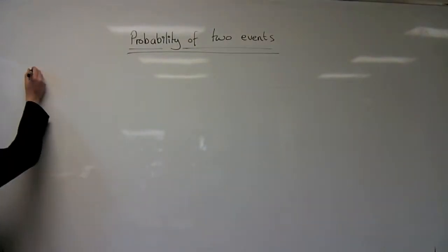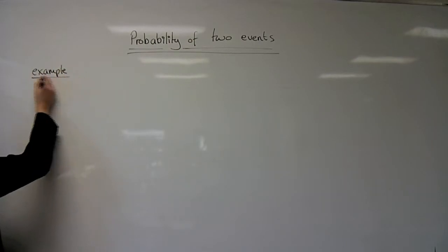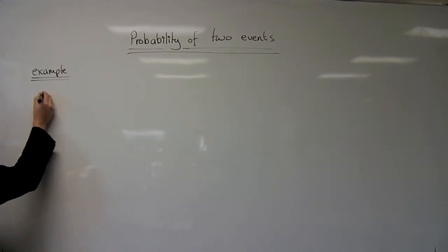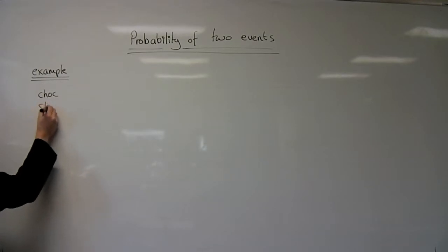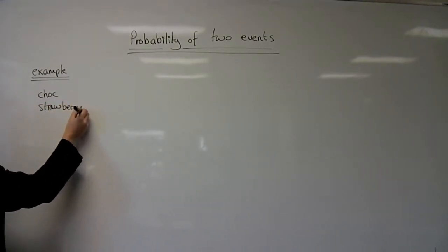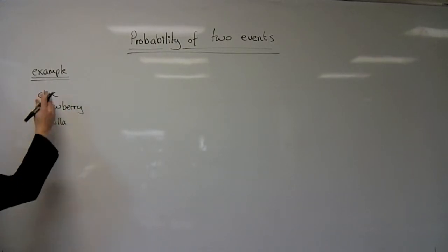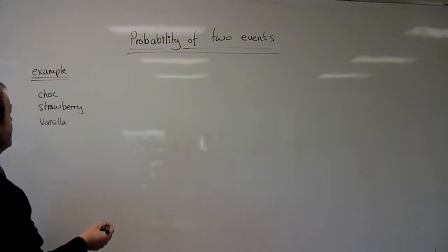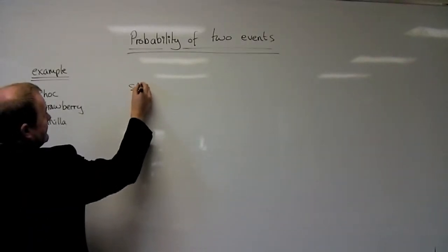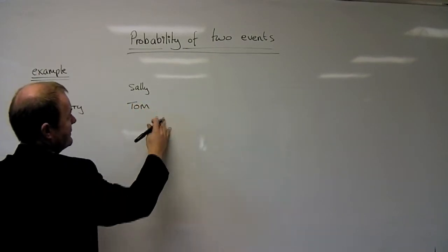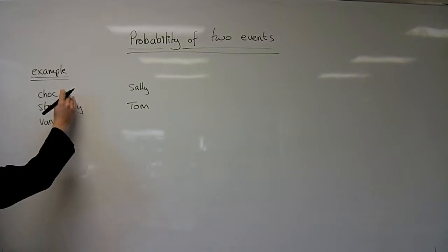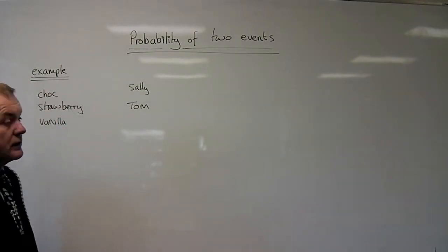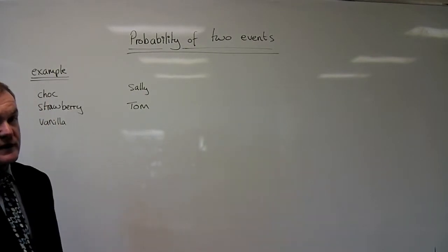In our first example, we'll look at ice cream. Let's say there are three flavours of ice cream — chocolate, strawberry, and vanilla. Three types of ice cream, and two people are going to choose: Sally and Tom. They're going to the ice cream shop and each chooses one flavour from three. We might be asked the probability of them both choosing chocolate, or the probability of them both choosing the same flavour.